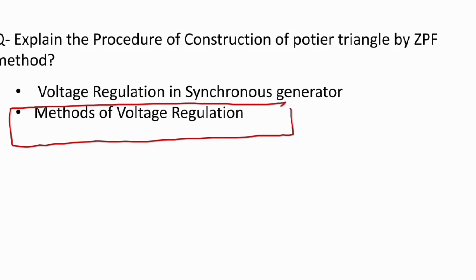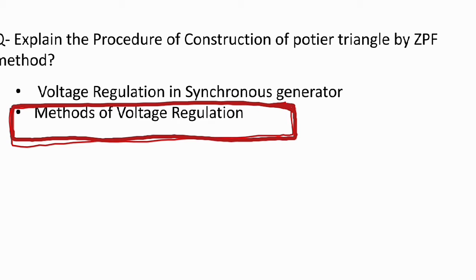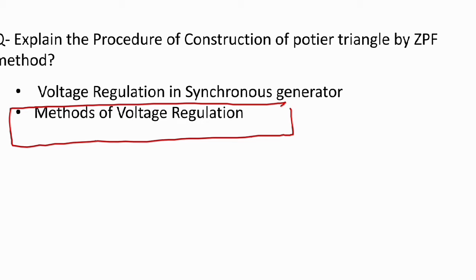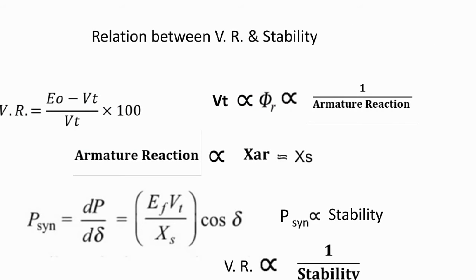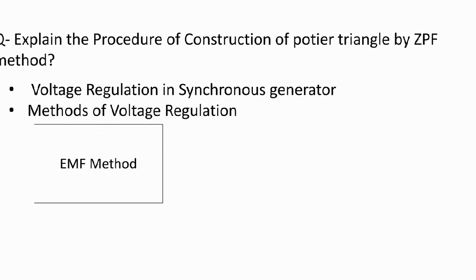Now, methods of voltage regulation: there are generally four methods. The first is the EMF method. This is the pessimistic voltage regulation method — we get voltage regulation higher than the actual value. The reason it is pessimistic is that it considers all reactances as leakage reactances.